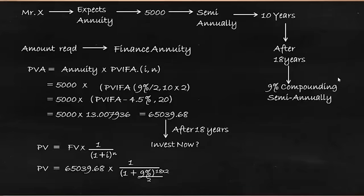This gives us a present value of 13,334.97. So if 13,334.97 is invested now at 9% compounded semi-annually for a period of 18 years, it would generate a future value of 65,039.68, which in turn could generate an annuity of 5000 semi-annually for the next 10 years.